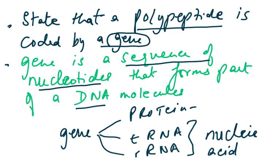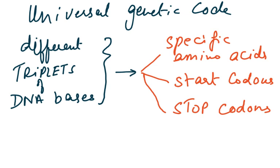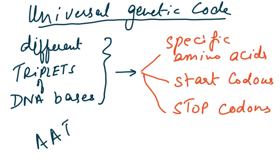So a polypeptide is coded by a gene, and a gene is a sequence of nucleotides that form part of a DNA molecule. Now, what do we mean by universal genetic code? This is the syllabus point. Universal genetic code means there are different triplets of DNA bases — AAT, AAC — different triplets of DNA bases. I said T, so this is DNA, not U which is RNA.